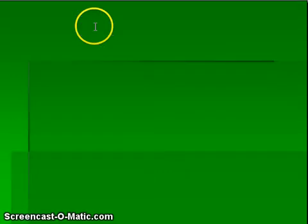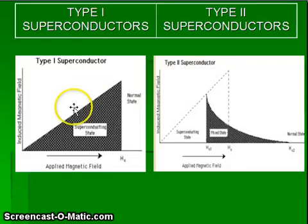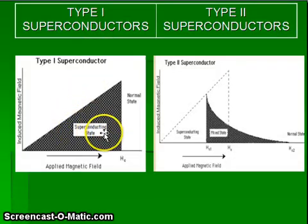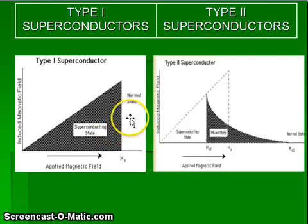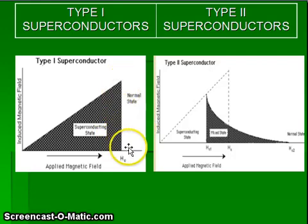In case of type 1 superconductors, the transition between the superconducting state and the normal state is abrupt and sharp.